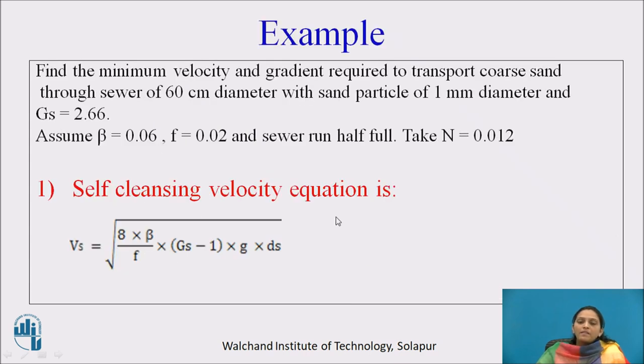Take one example: Find the minimum velocity, which is nothing but the self-cleansing velocity, and gradient required to transport coarse sand through a sewer of 60 centimeter diameter with sand particle of 1 mm diameter. Take specific gravity 2.66, assume beta 0.06, friction factor 0.02, and the sewer runs half full. Take N equals 0.012.